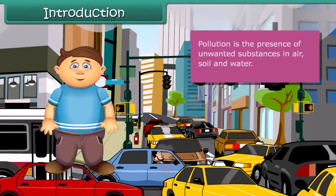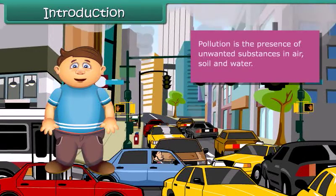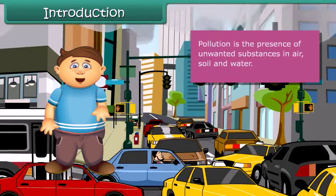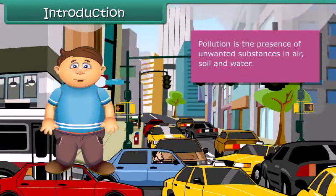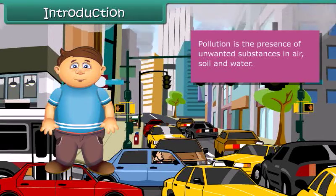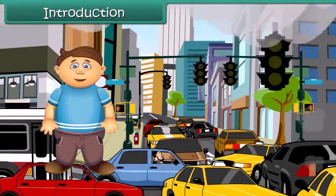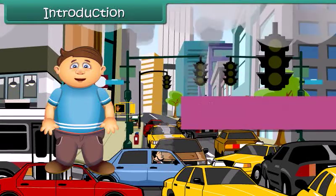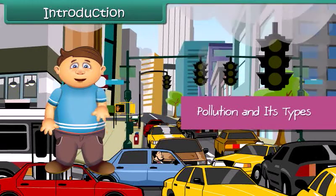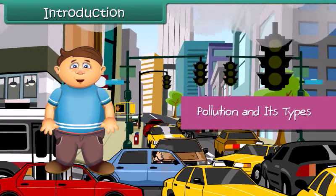We can define pollution as the presence of unwanted substances in air, soil and water. Now let's discuss in detail about pollution and its types.